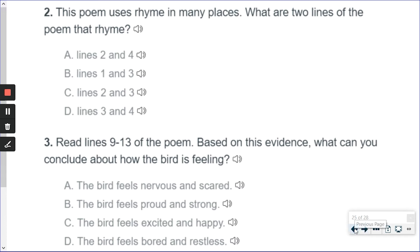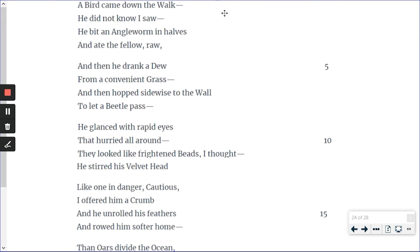This question two says, the poem uses rhyme in many places. What are two lines of the poem that rhyme? Are they two and four? One and three? In other words, you look at the lines. This is one, two, three, four. Which pair of sentences, which pair of lines rhyme? Does walk rhyme with saw? No. A rhyming word, it sounds the same at the end.